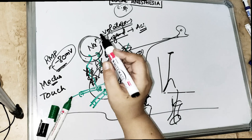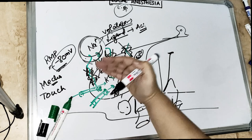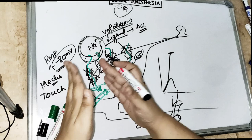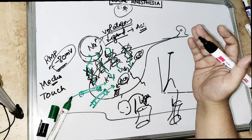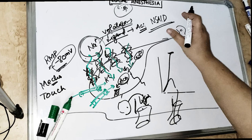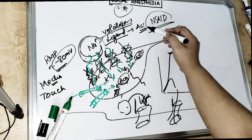Local anesthesia blocks the sodium channel reversibly — not irreversibly. So after the effect is gone, again the sodium gated voltage channel can open and the pain impulse can start. This is the reason that after doing any extraction under LA, we prescribe the patient NSAIDs, we prescribe analgesia, because after the anesthetic effect is gone, the nerve will conduct pain normally and the patient will again feel the pain.